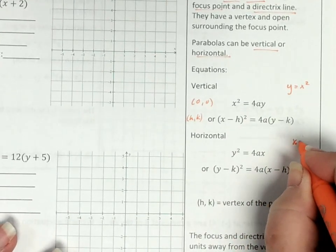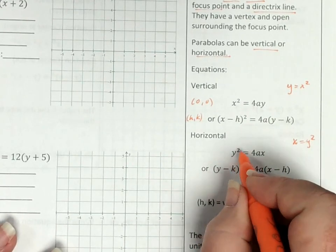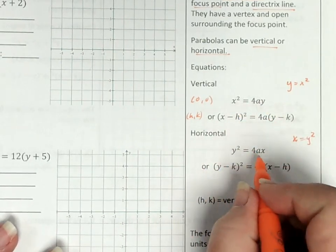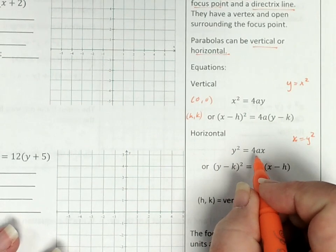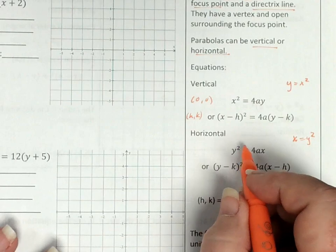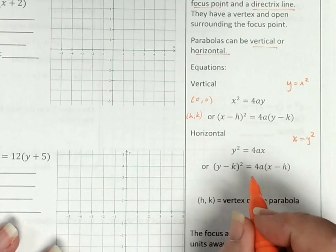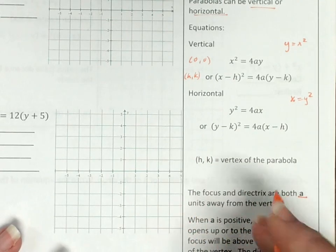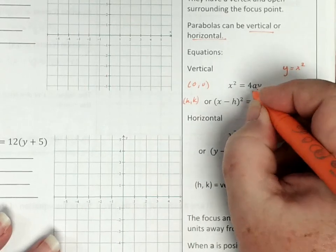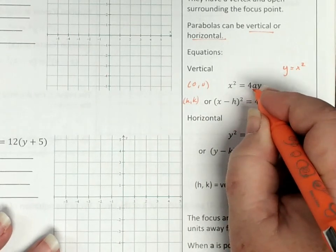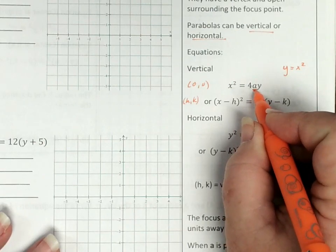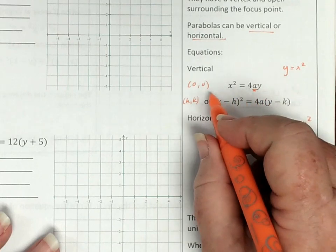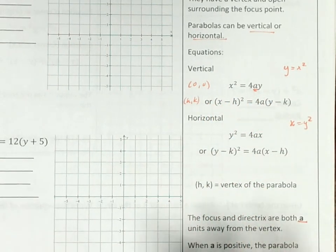Horizontal parabolas have x equals y squared — in other words, the y value is what's squared. The only difference is the x's and y's switch places, because horizontal and vertical parabolas are inverses of each other. The focus and the directrix are both a units away from the vertex. In our equation, 4a tells us how far away the vertex is from the focus and the directrix.